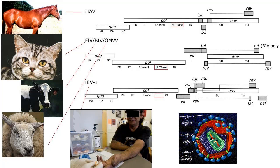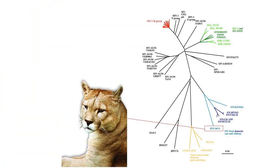There are lentiviruses that infect cats, goats, horses, sheep, cows, and monkeys. There's even a puma lentivirus. Not all of them cause disease under certain conditions.